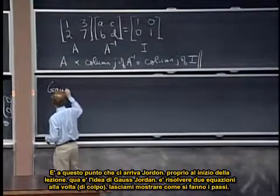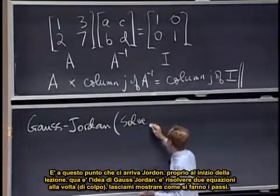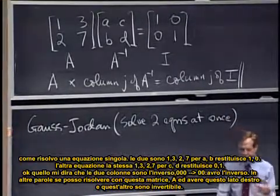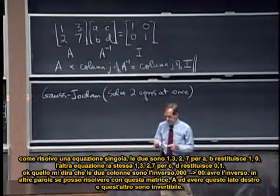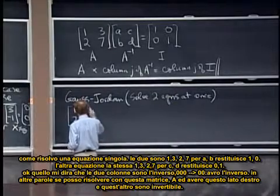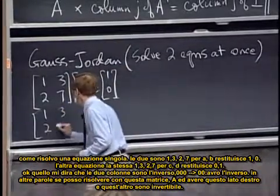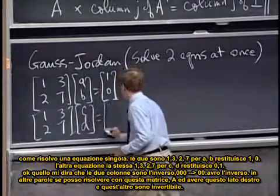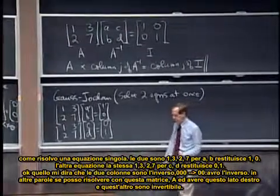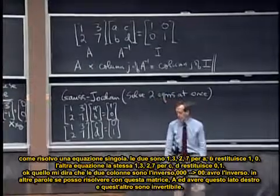Here's the Gauss-Jordan idea. Gauss-Jordan solves two equations at once. Let me show you how the mechanics work. The two equations are one, three, two, seven multiplying A, B gives one, zero. And the other equation is the same, one, three, two, seven multiplying C, D gives zero, one. That'll tell me the two columns of the inverse. In other words, if I can solve with this matrix A, if I can solve with that right-hand side and that right-hand side, I'm invertible. I've got it.